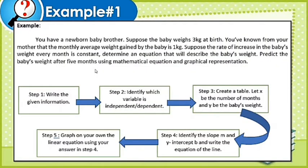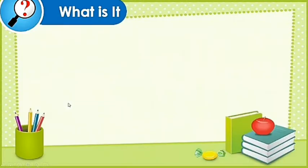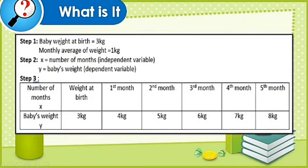Problem solving got to be solved using a five-step procedure. You have a newborn baby brother. Suppose the baby weighs 3 kilograms at birth. You've known from your mother that the monthly average weight gained by the baby is 1 kilogram. So the given information: baby's weight at birth 3 kilograms and monthly average weight 1 kilogram.